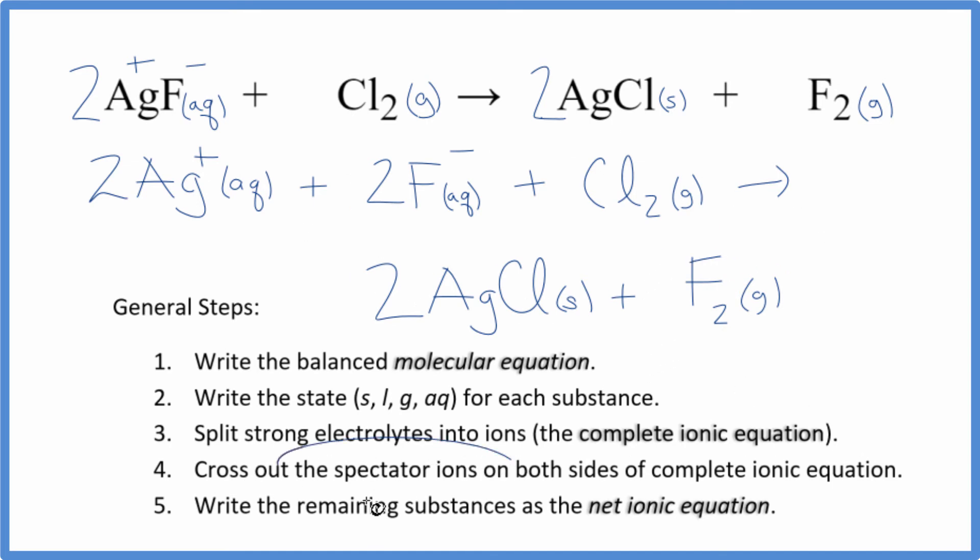At this point we can cross out spectator ions. They're on both sides. The thing is there's nothing on both sides that is the same. Everything is different.